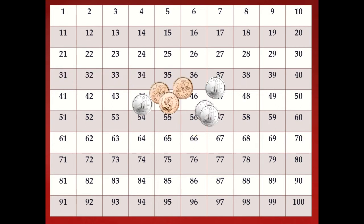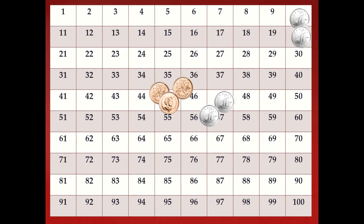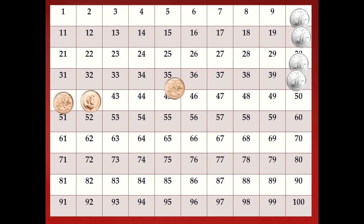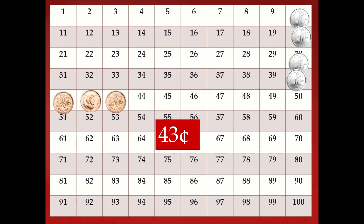Here's some more money. We're going to count it together. Our dimes are ten cents and our pennies are one. Let's start with our dimes: ten, twenty, thirty, forty, forty-one, forty-two, and forty-three. This is forty-three cents. Well done.